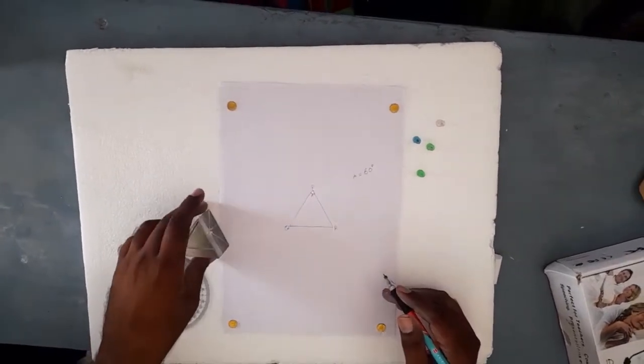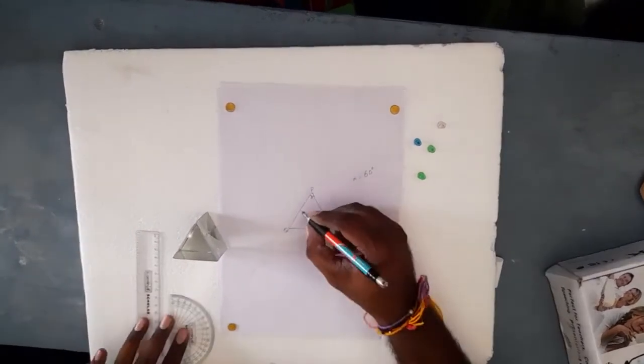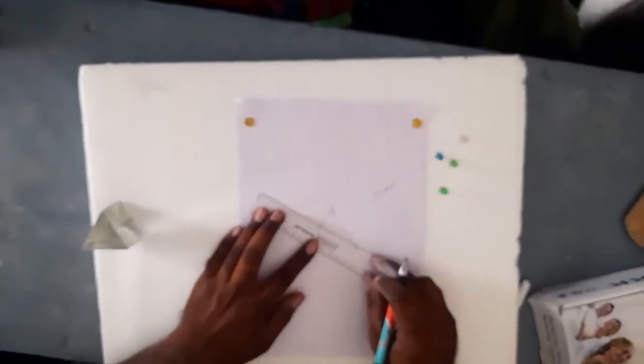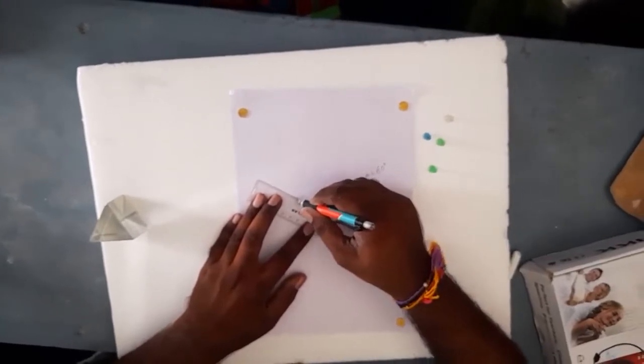Now I need to mark a point on the PQ surface. That point will be the point of incidence M. At that point, I need to draw a normal, which I am marking with a dotted line.